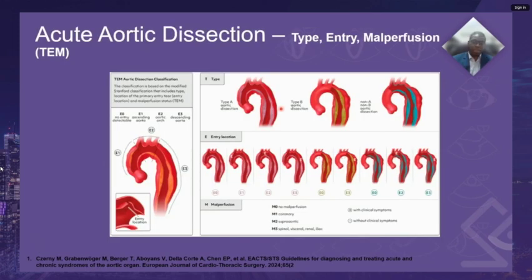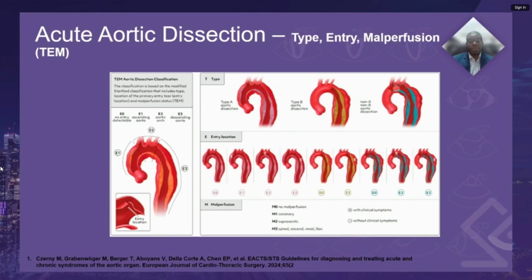As my colleague Dr. Neera had previously mentioned, the type-entry-malperfusion classification system, recently published by the European Association for Cardiothoracic Surgery and the Society for Cardiothoracic Surgeons, has updated the classification of aortic dissection. Type A involves only the ascending aorta, type B the descending aorta, and non-A non-B where the dissection flap extends through or into the aortic arch but does not involve the ascending aorta. The dissection is further described in terms of the entry location and the presence or absence of malperfusion.